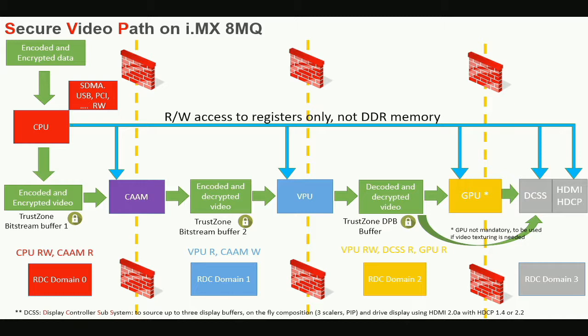Audience: Is this TrustZone? Response: TrustZone only covers the CPU — RDC is stronger than TrustZone because it covers all peripherals and all master buses of the i.MX 8M. It is configured in ATF at boot time, and then the registers are locked — it is no longer possible to change the RDC configuration. Even if OP-TEE is compromised and someone injects a malicious TA, the CPU in TrustZone secure mode still cannot access this hardware-protected memory.